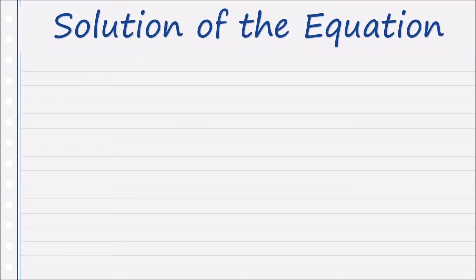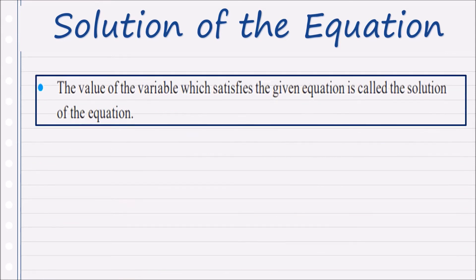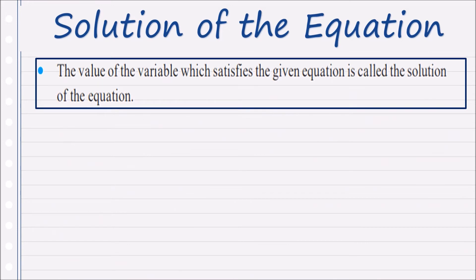Let's understand what is the solution of an equation. The value of the variable which satisfies the given equation is called a solution of the equation. For example, if the given equation is x plus 4 equals to 9, you can see this equation contains one letter of the alphabet, x, which is called the variable of this equation.